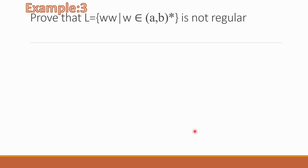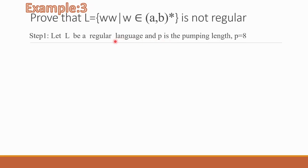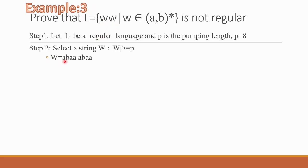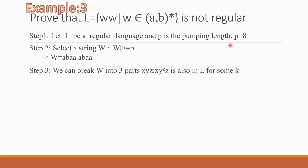Example 3: Prove that L = {WW | W ∈ (AB)*} is not regular. Again, let L be a regular language, p be the pumping length, p equal to 8. We select a sample string whose length is greater than or equal to the pumping length. WW means any combination of A and B repeated — the second part is the same as the first. I select the string ABAA repeated: ABAA ABAA, which has length 8, equal to our pumping length.